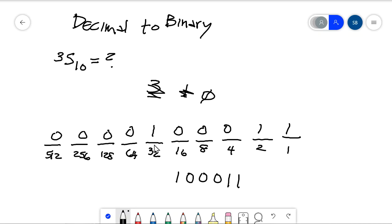But I can check it by saying 32, the positions where there's a 1, I'm going to add those up. 32 plus 2 is 34 plus 1 is 35. And my check equals.